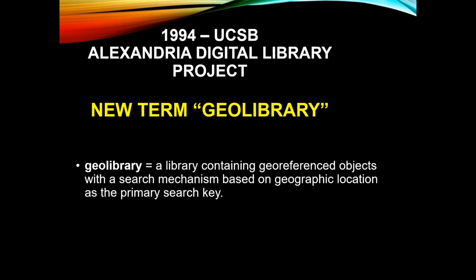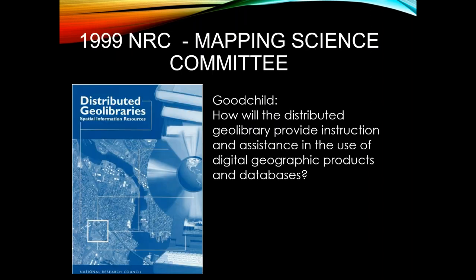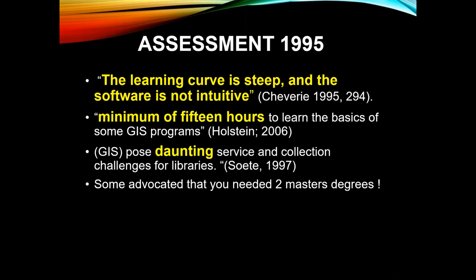In 1994, UC Santa Barbara launched the Alexandria Digital Library Project with a new term — a geo library: a library containing geo-referenced objects with a search mechanism based on geographic location. Mike Goodchild was probably responsible for this. Around 1999, the National Research Council Mapping Science Committee held a workshop, organized by Mike, all about how distributed geographic geo-libraries would provide instruction and assistance into the future.